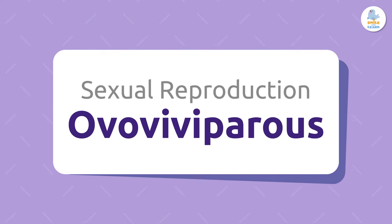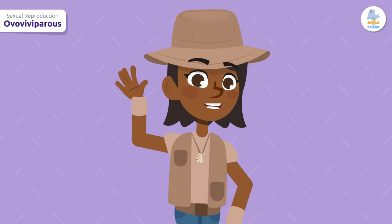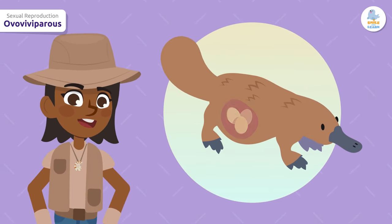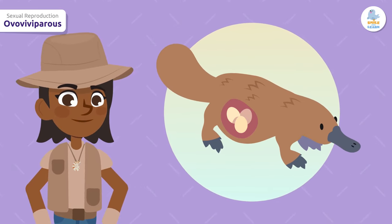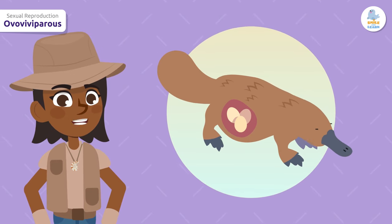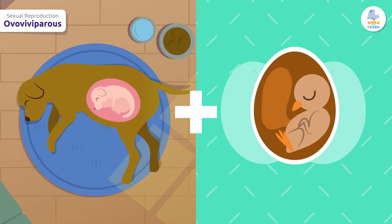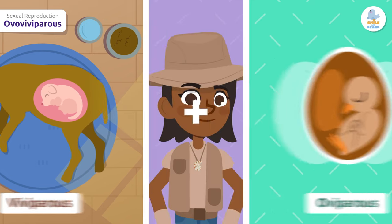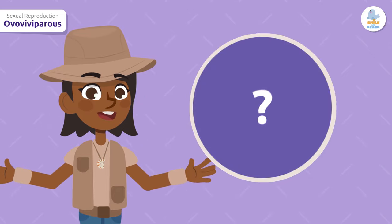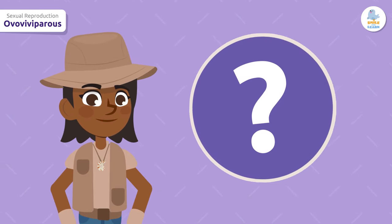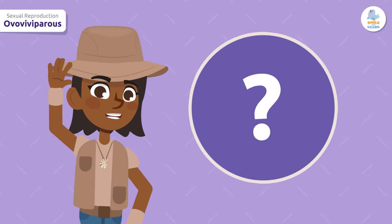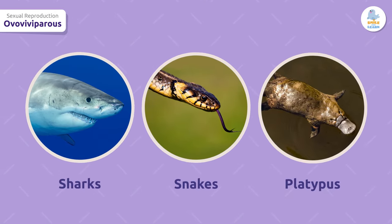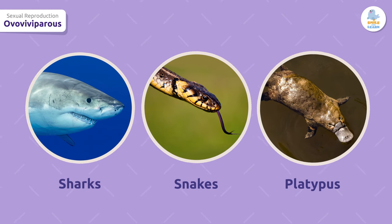Ovoviviparous! There aren't many animals with ovoviviparous reproduction. Their embryos develop inside an egg, which grows inside the mother's womb. They're like a mix of viviparous and oviparous animals. Do you know any examples of ovoviviparous animals? The most famous are some sharks, snakes, and the platypus — what interesting animals!